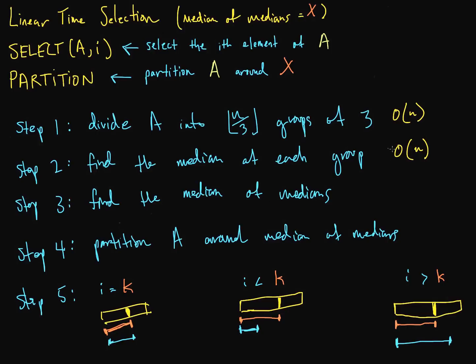Then we find the median of the medians that we found in step 2, by recursively calling select on those n/3 medians. So the running time of this would be T(ceil(n/3)) — ceiling because if we have an even number of groups and we try to take the median, we have two choices, so we take the higher one. In step 4, we partition A around that median of medians found in step 3. Our partition runs in O(n) time — it's linear.